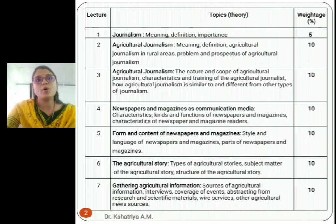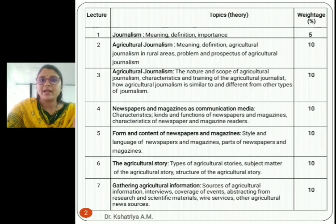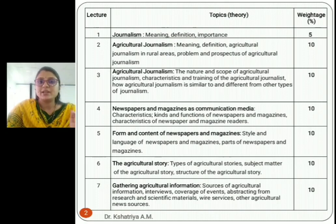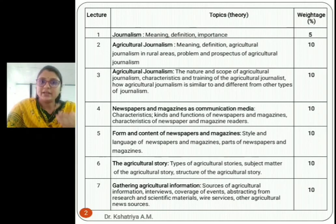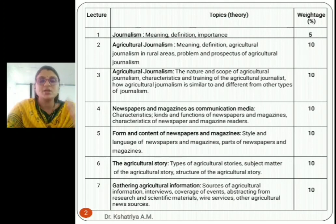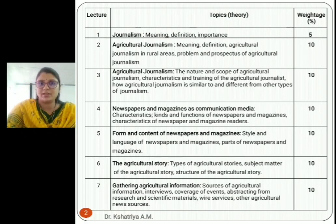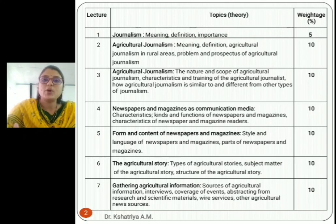The third topic is also agricultural journalism, but in that we are going to discuss about the nature and scope of agricultural journalism, characteristics and training of the agricultural journalist. A journalist is a person who collects information, interprets it, and transfers it through print media to the audience. We will also discuss how agricultural journalism is similar to and different from other types of journalism. This topic is about ten marks.